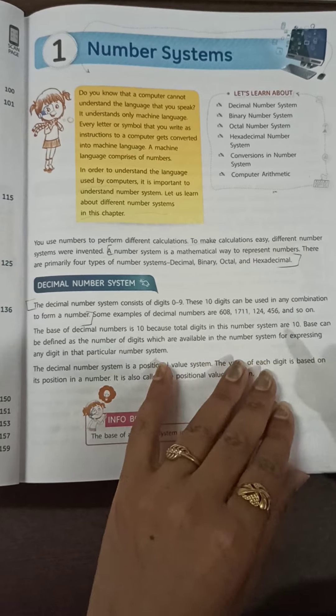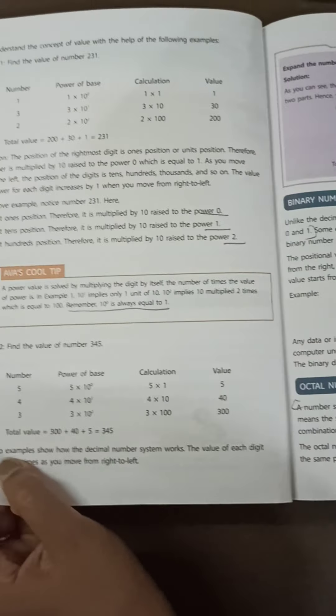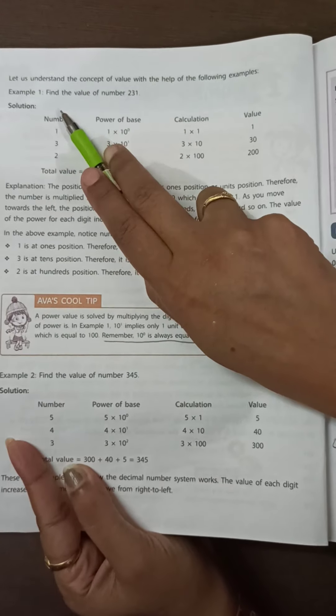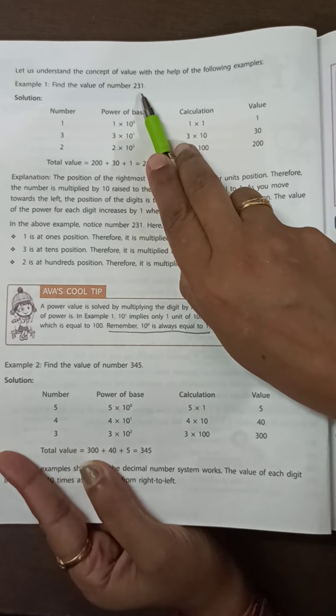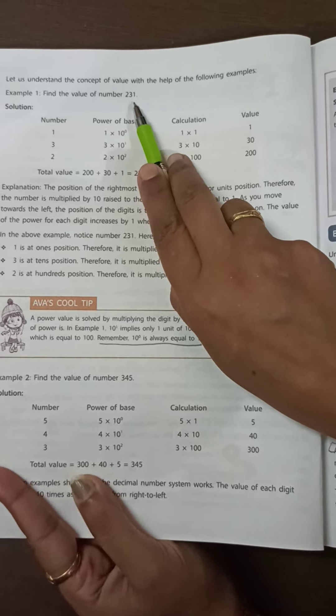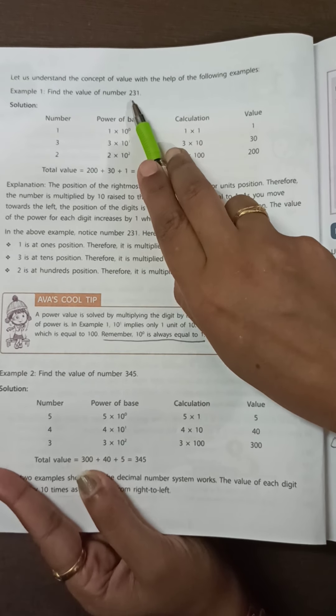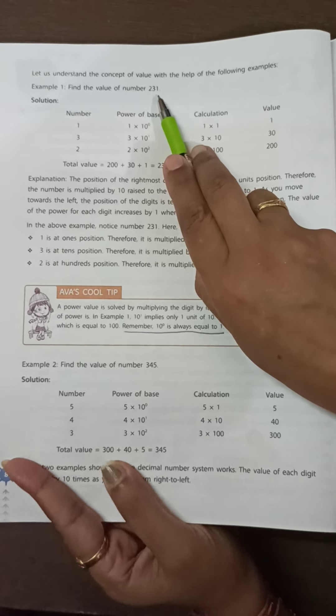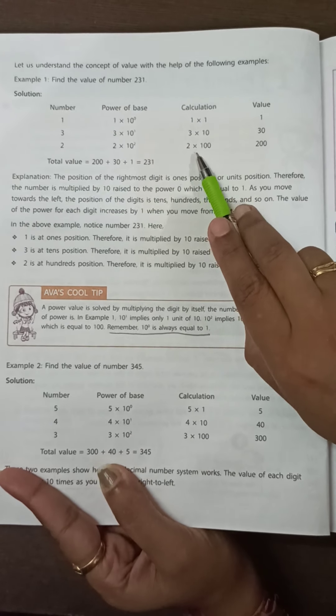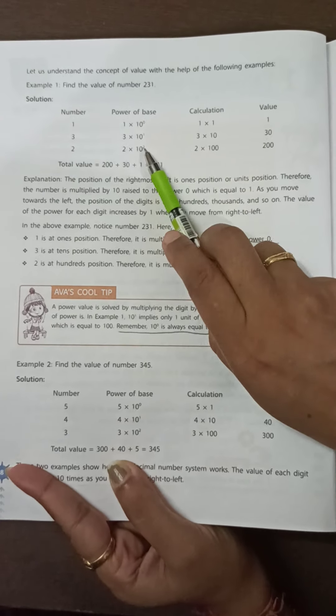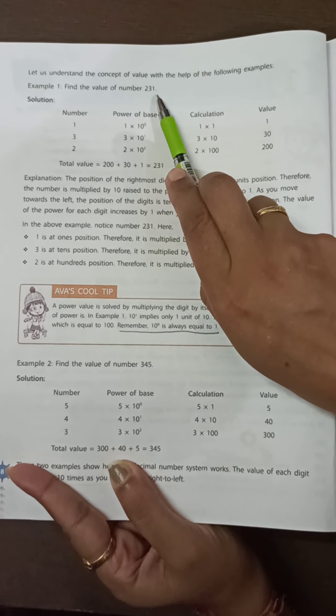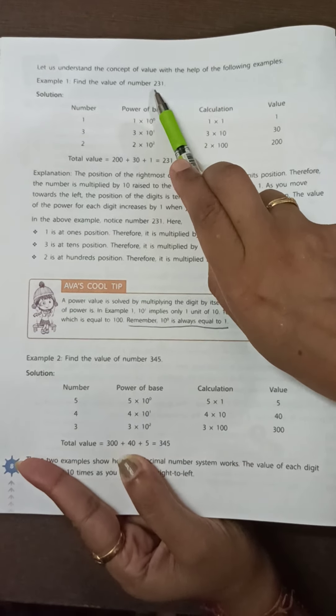Now we use the decimal number system in day-to-day life. For example, find the value of the number 231 in decimal number system. In that number, we have to use 0 to 9 digits. To find the value of the decimal number system, we start from the right side: 1, 3, 2.